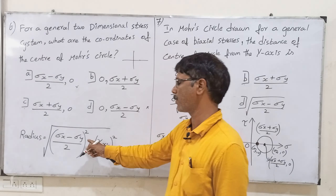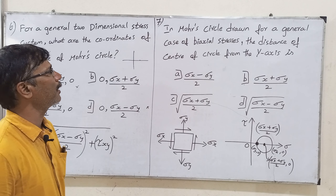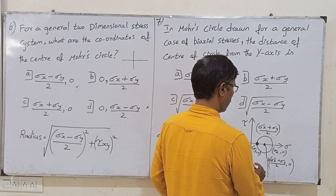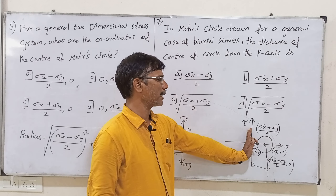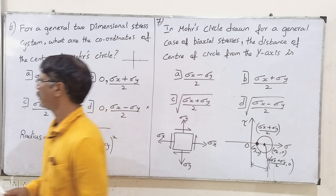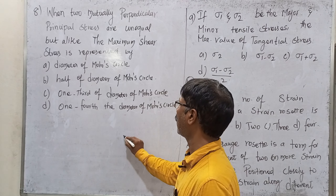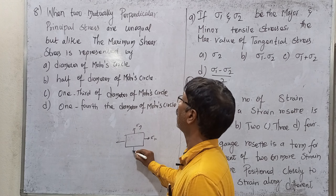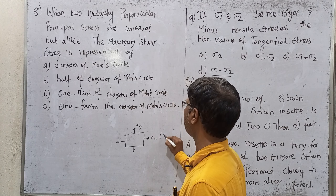The Mohr's circle formula is: square root of (sigma x minus sigma y) divided by 2, whole square, plus tau xy whole square. For a general case, the distance from the center of the circle to the y-axis gives the center at sigma x plus sigma y divided by 2. The y-axis coordinate is zero. When looking at two mutually perpendicular planes, if sigma x equals sigma y, then it is unequal — this is important for the center of the circle.